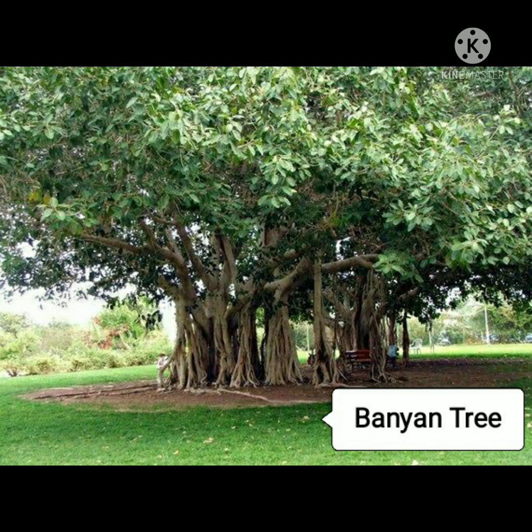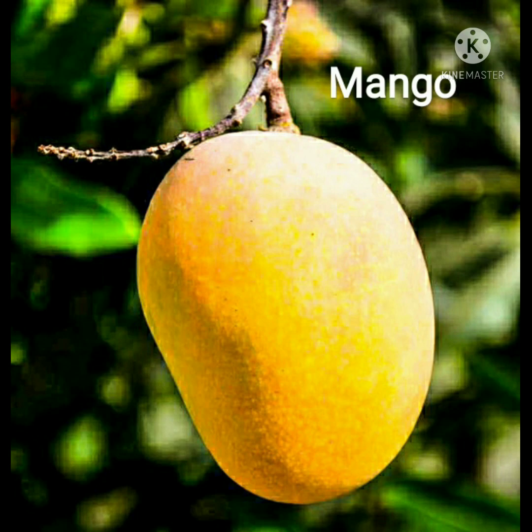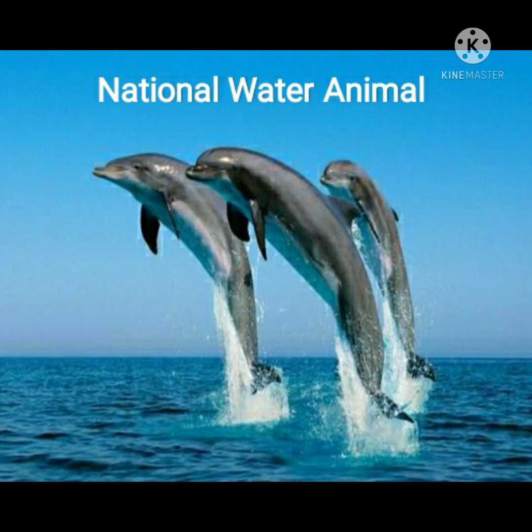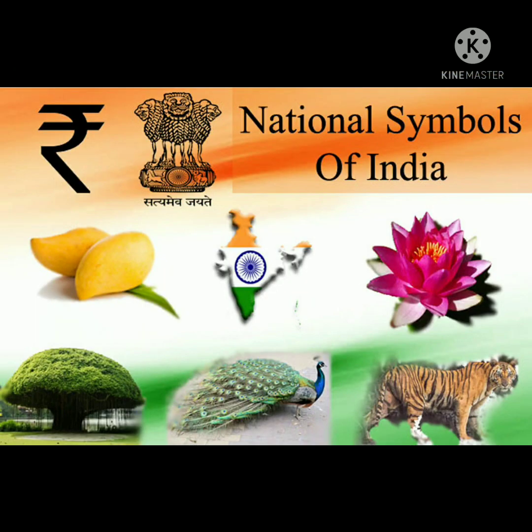Next is the national tree of India. The national tree of India is the banyan tree. Next is the national fruit of India. The national fruit of India is mango. And finally, the national water animal of India is the river dolphin.